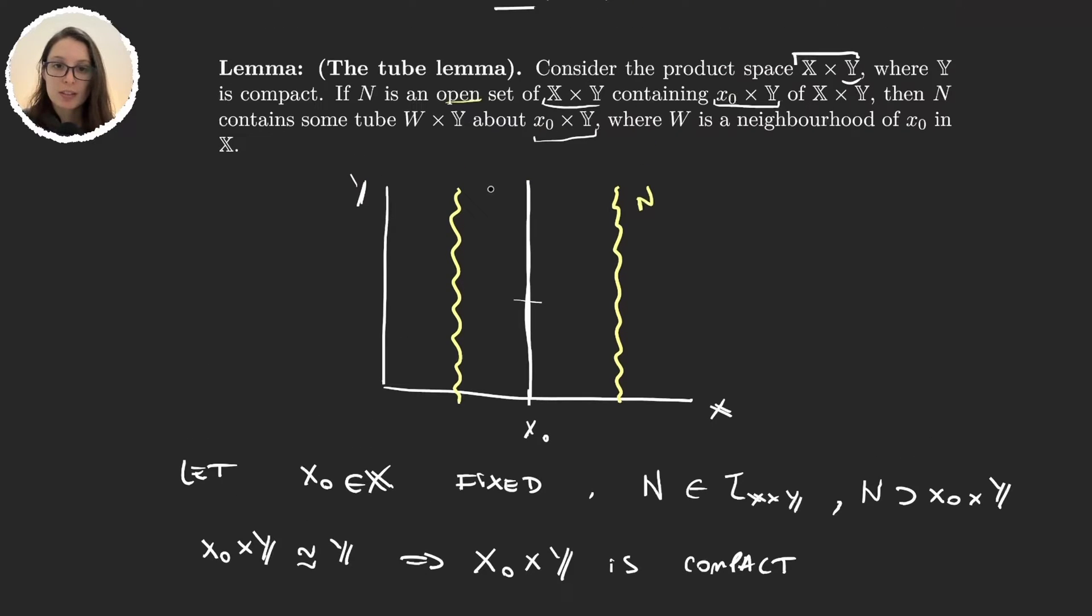So, what we have is that this set will be covered by some rectangles, but only a finite amount of them,